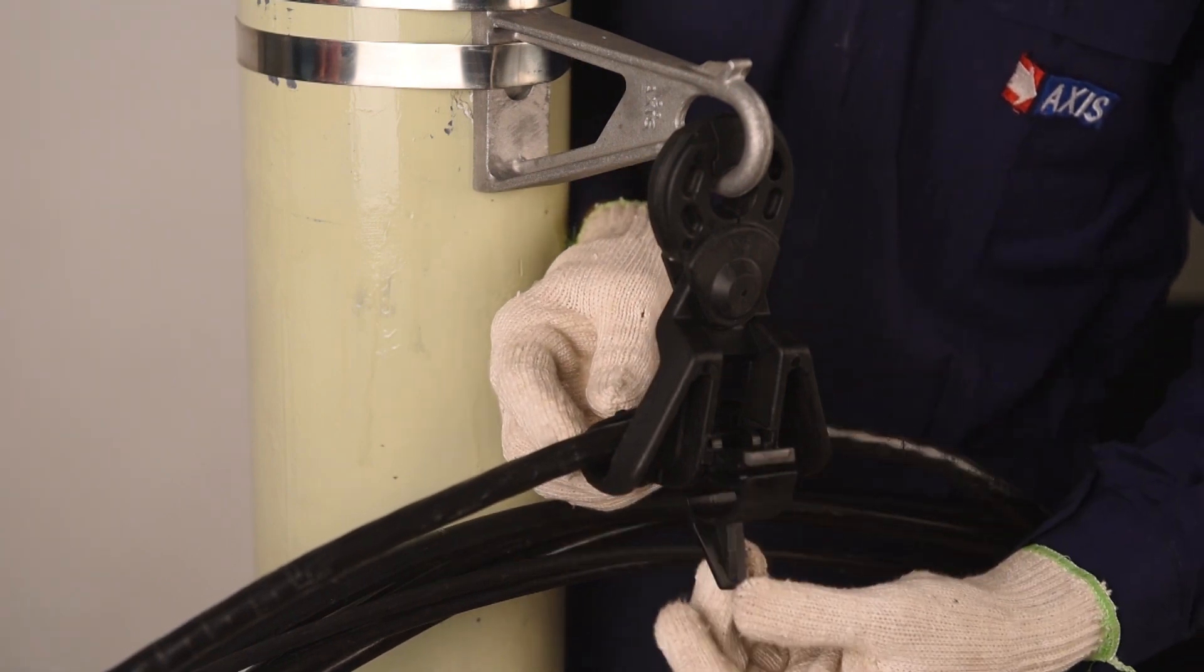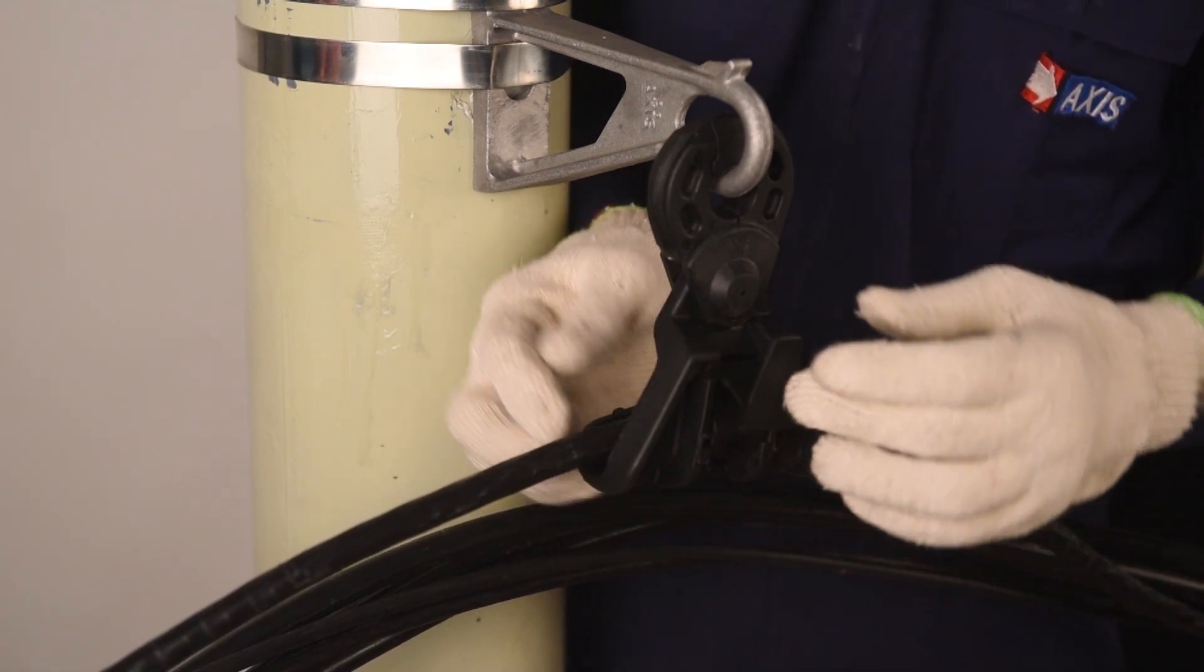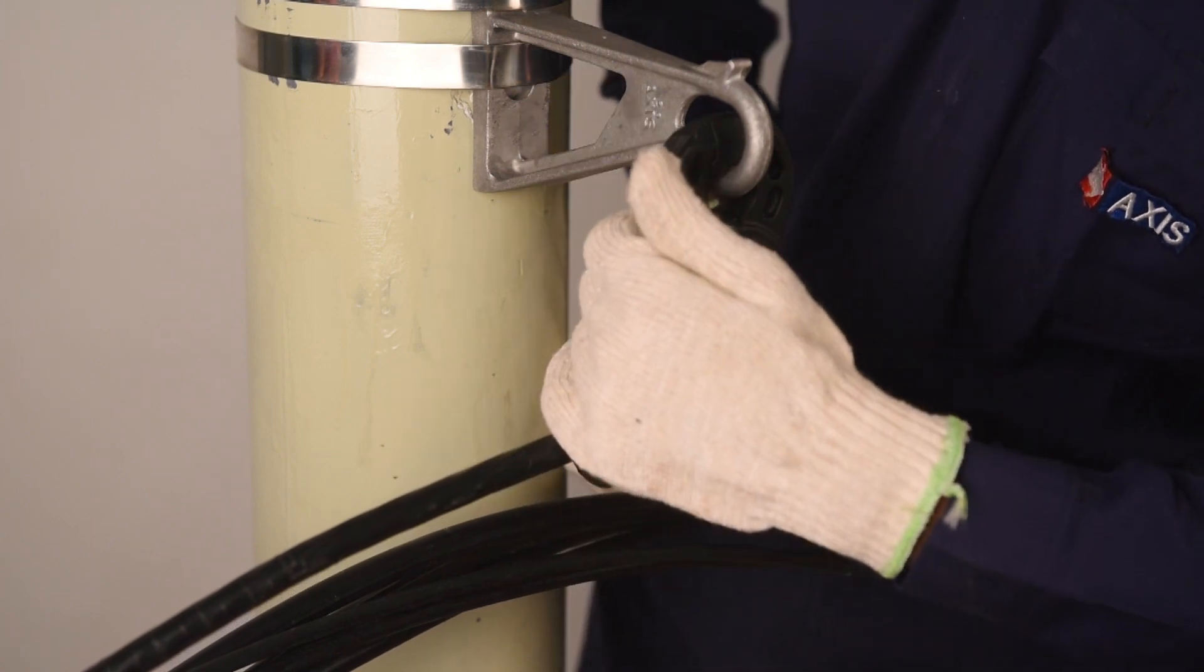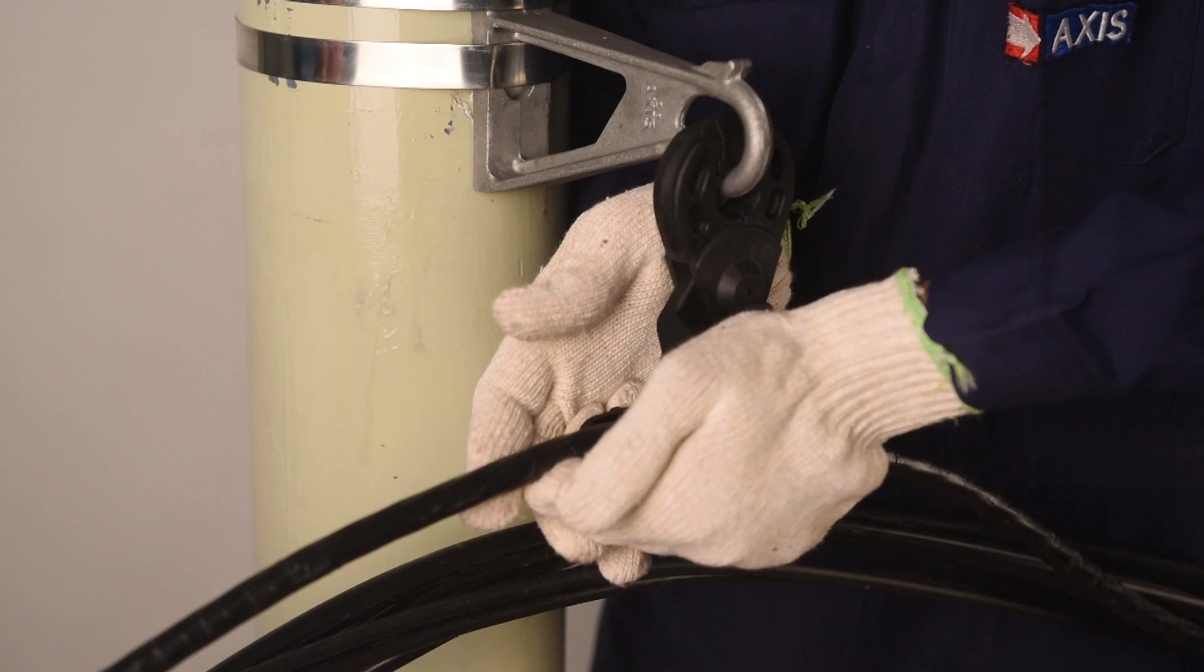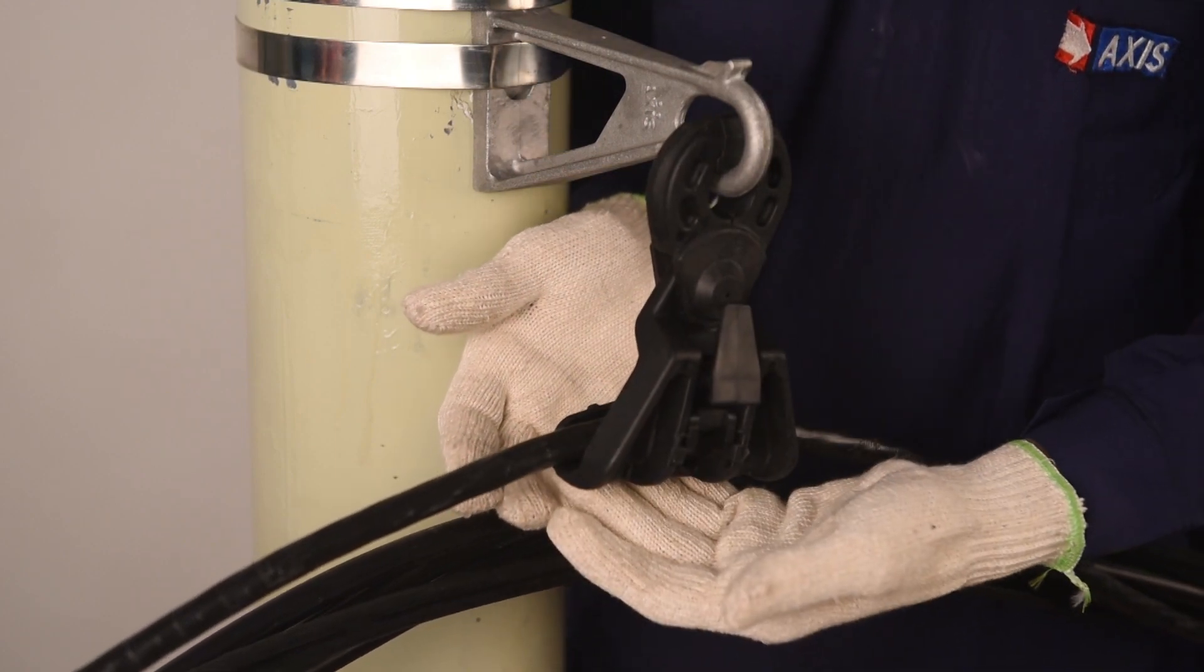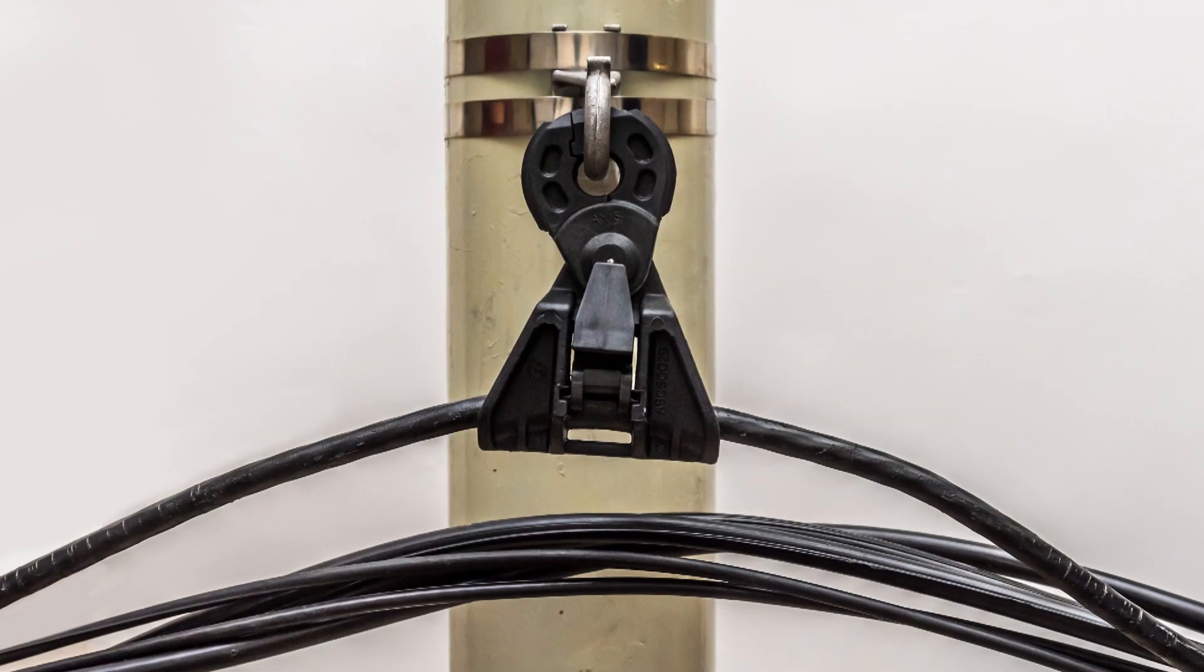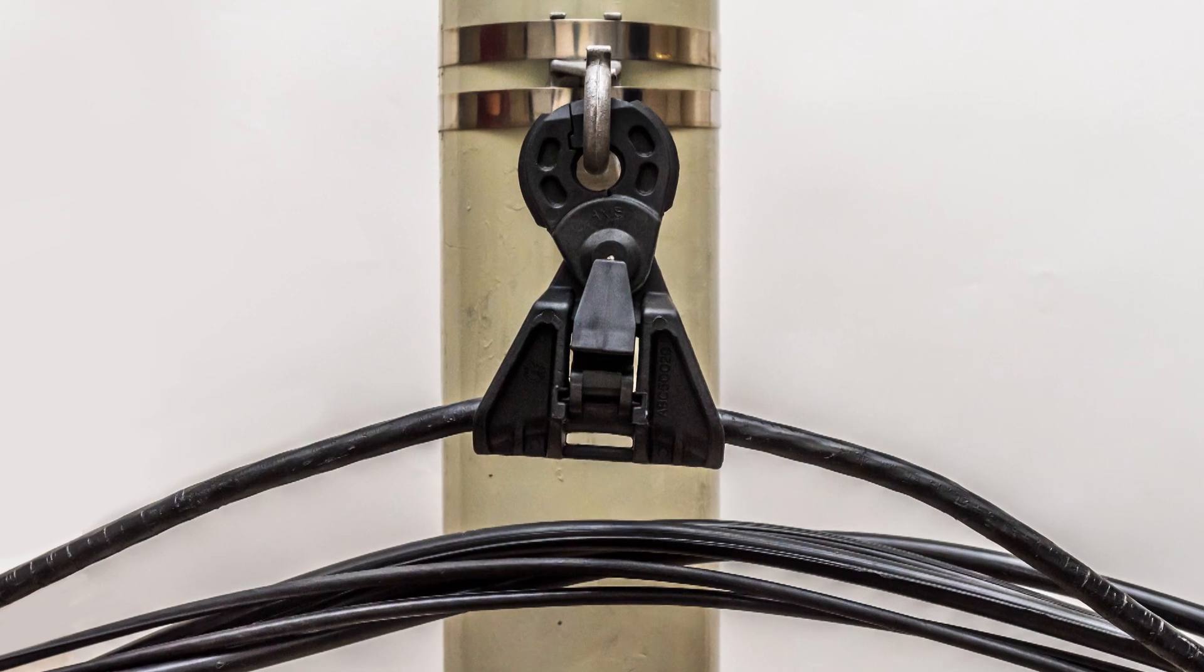Once located, push the clamping lock till it slides up to the maximum limit. Recheck that the cable does not slide from the clamp. You have successfully installed the suspension clamp.